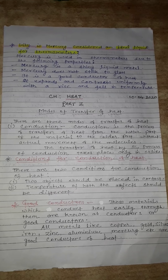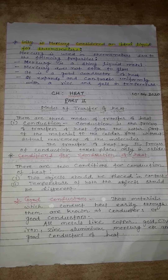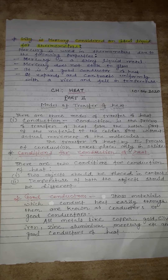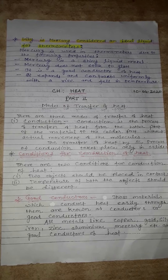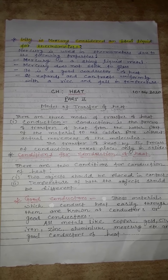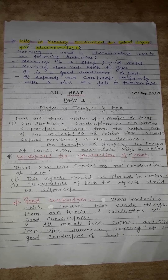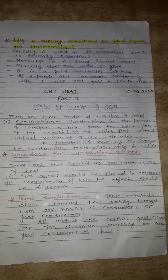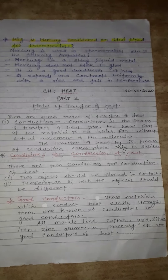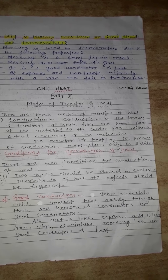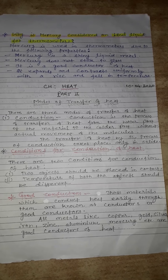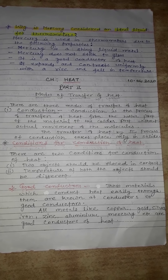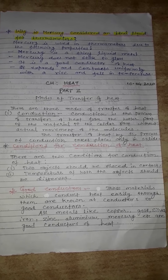Now, good conductors — or simply conductors. Materials that allow heat to pass through them easily are called good conductors of heat. Examples include all metals like copper, gold, silver, zinc, aluminium, and mercury. Good conductors carry heat from one part to the other part of the body.